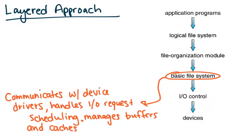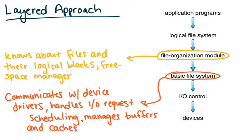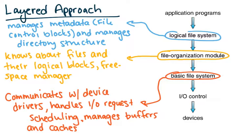The basic file system communicates with those device drivers, handles IO request scheduling, and manages buffers and caches. The file organization module knows about files, knows where their logical blocks are, and also contains the free space manager, which we'll cover in a future video. The logical file system manages all the metadata, including file control blocks, and also manages the directory structure.